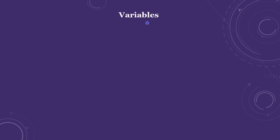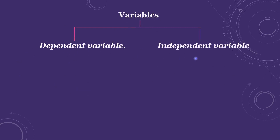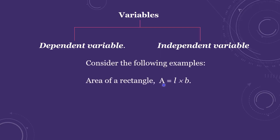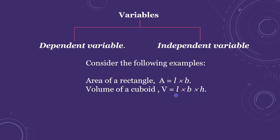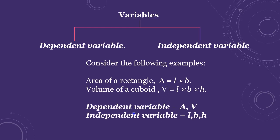Variables are classified into two types: dependent variable and independent variable. For example, the area of a rectangle is A = length × breadth. Here length and breadth are independent variables, and A is the dependent variable. Similarly, volume of a cuboid is V = length × breadth × height. Length, breadth, and height are independent variables, and V is the dependent variable.